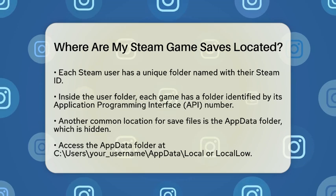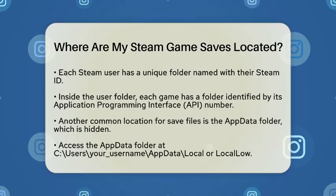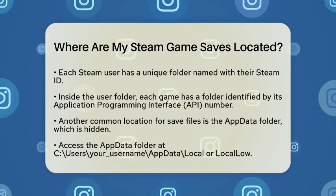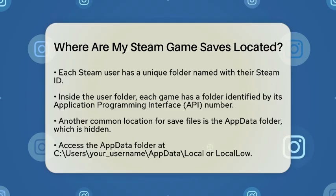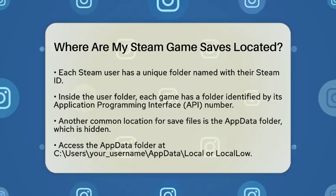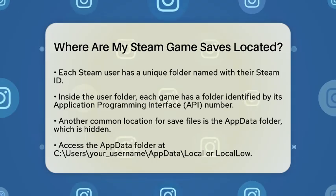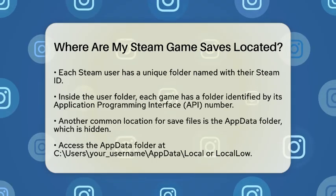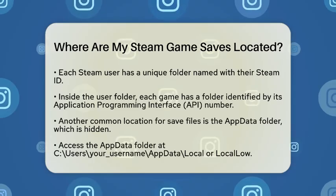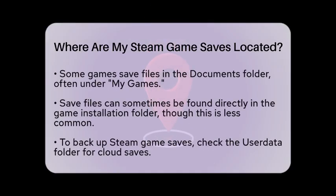Another common location for save files is the AppData folder. This folder is hidden within your user profile and can be accessed by navigating to C:\Users\[your username]\AppData\Local. Many games store their save files here. For example, you might find a game saving files in C:\Users\[your username]\AppData\Local\[game name]\Saved\SaveGames. This location is often used by games that do not rely on Steam Cloud or need to store additional local save data.